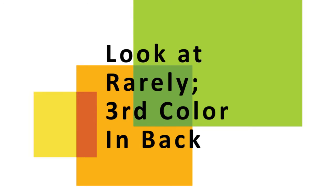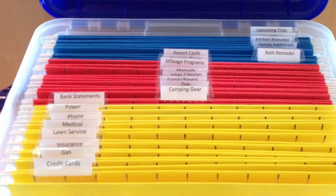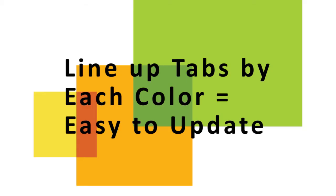Use another color to separate those things that you use very rarely. And you can see I've lined up the tabs in different places — use the same tab location for each color. That way, adding and deleting files from your system will be much easier.